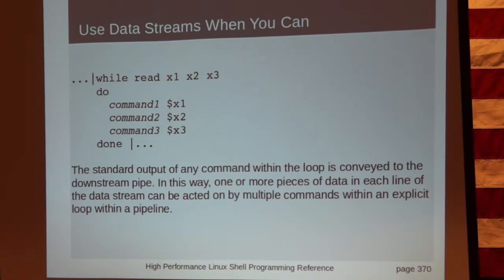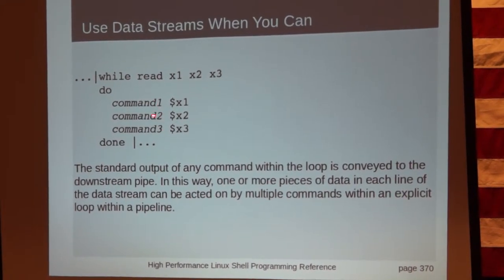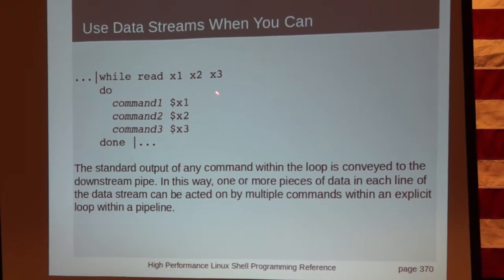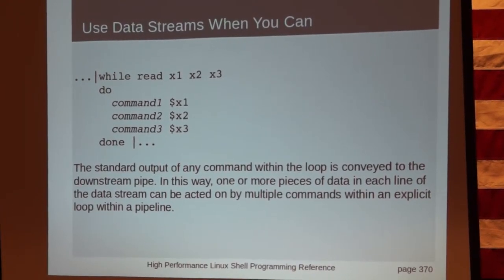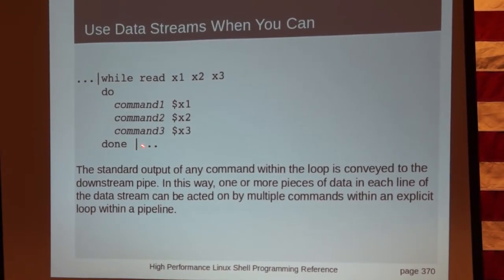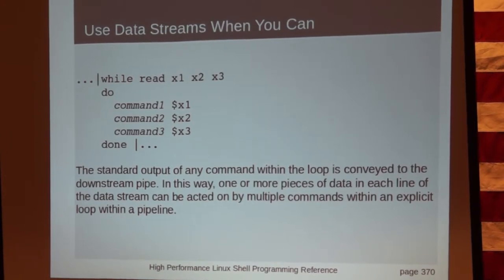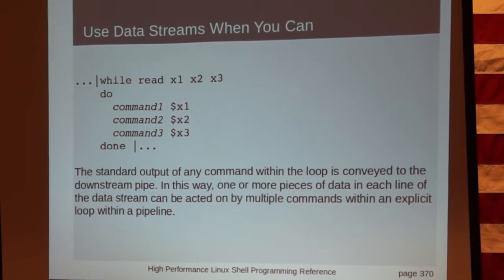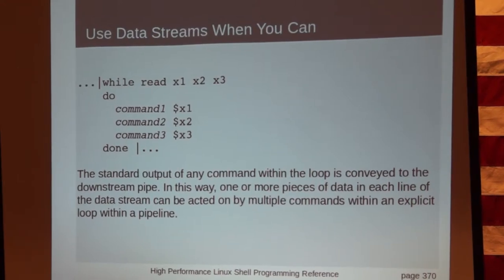Here we have a while loop where we have three items per line in the incoming stream. We're assigning those as variable values, executing commands on them, and then letting everything go to the output side of the pipeline, to the point where the next thing in the pipeline graph picks up that generated data.